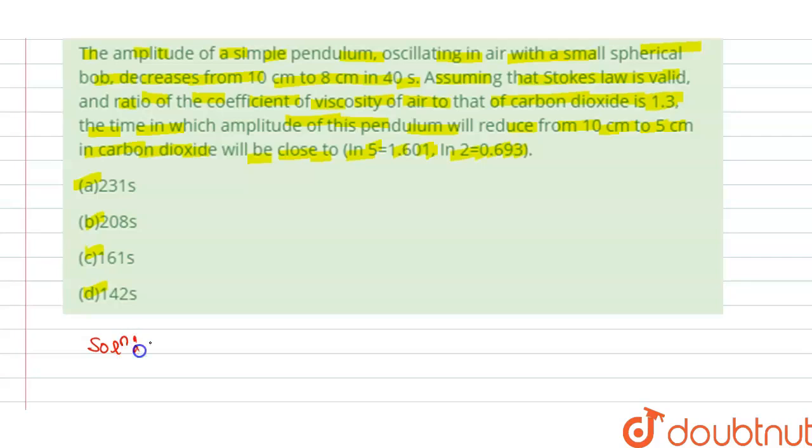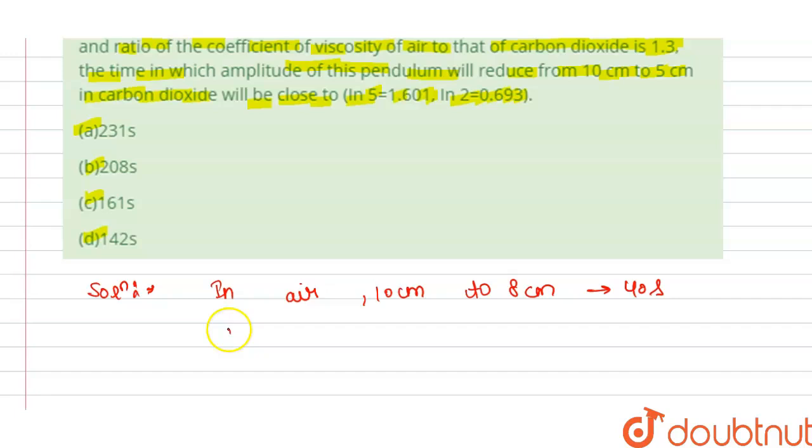So the solution: In air, we have 10 centimeter decreases to 8 centimeter in 40 seconds. In CO2, 10 centimeter decreases to 5 centimeter, and we have to find in how many time.